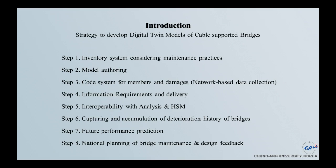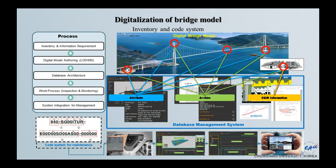This is current ongoing research work. Capturing the deterioration history of bridges is very important, and we are doing those parts also. When we have this data, we can do future performance prediction. This is a process, and we decide which maintenance work to do using the attribute archive and O&M information using these systems.